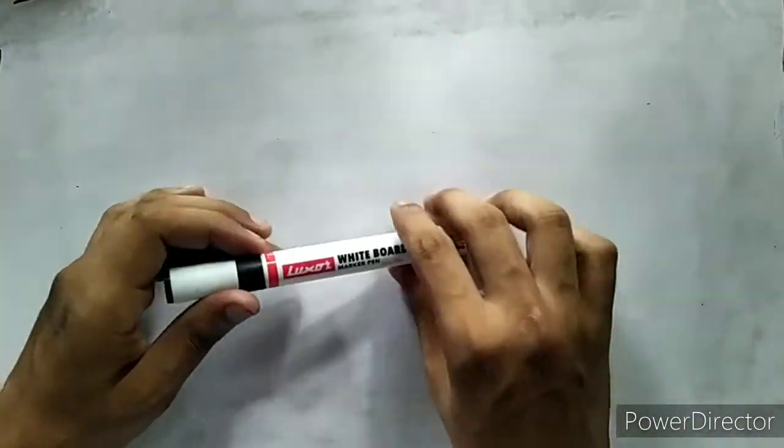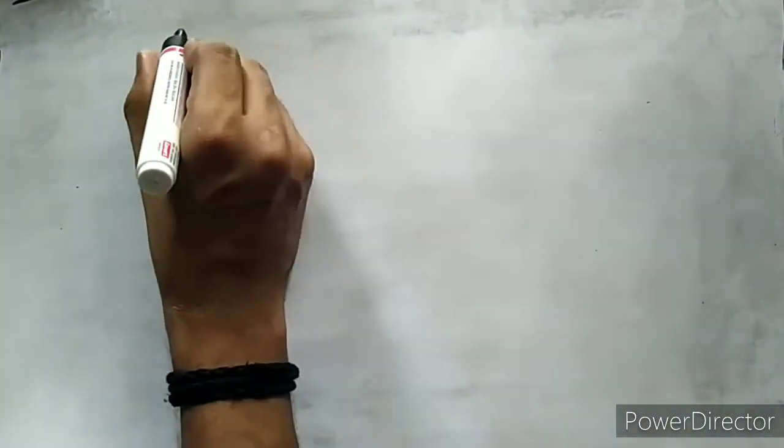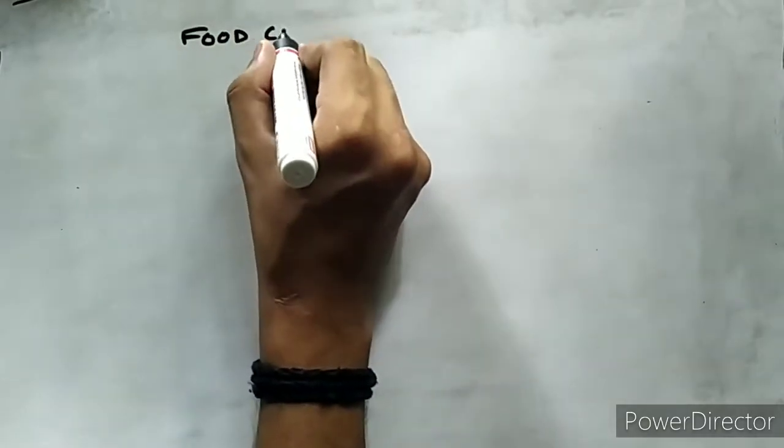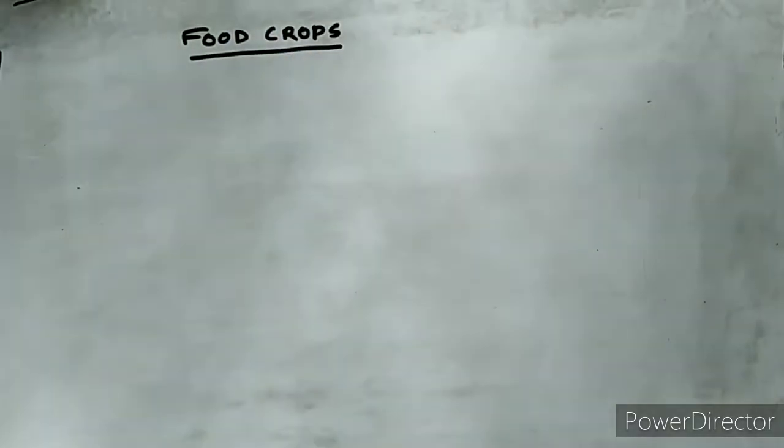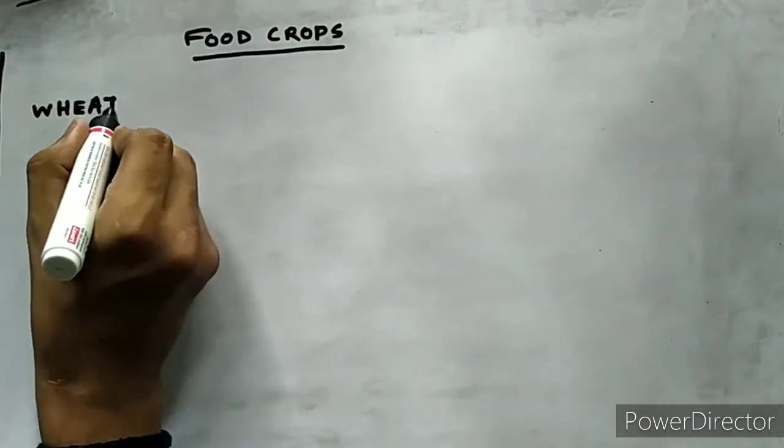Hello everyone, welcome to Civil Go. Today we are continuing the GS5 course on APSC. Last class we discussed about the agriculture and agricultural sector in Assam. Today we will continue the remaining portion of food crops.